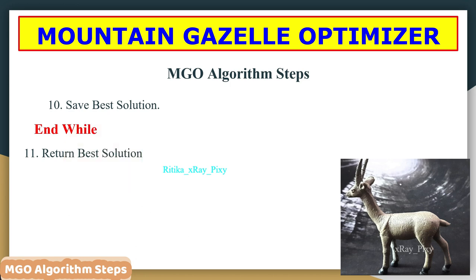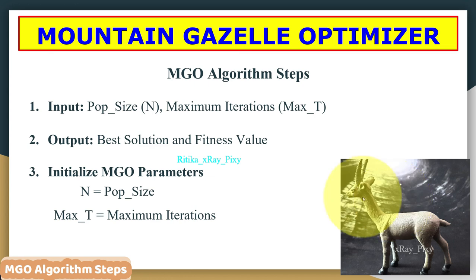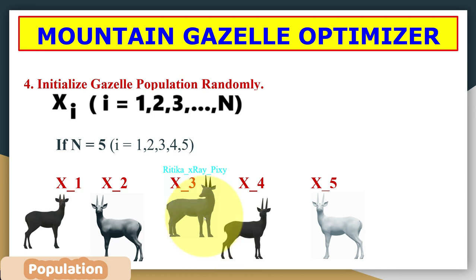Now we will understand the algorithm step by step. First, we initialize the parameters: population size n — the total number of gazelles in the current population — and the maximum number of iterations, which determines how many times the loop repeats before displaying the best solution.